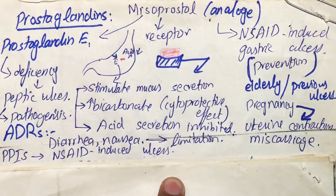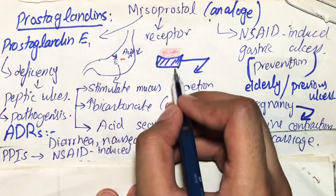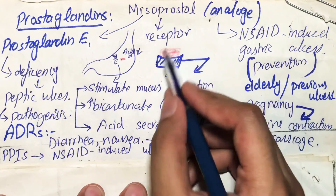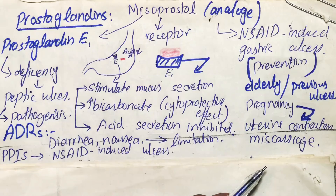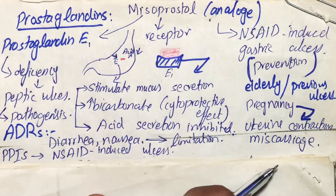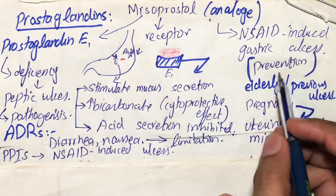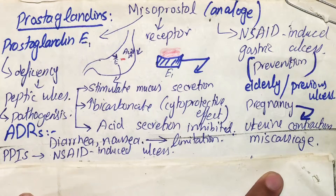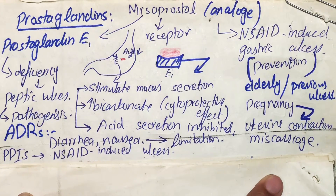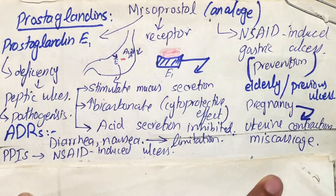To overcome prostaglandin deficiency, we discussed misoprostol, which is an analog of prostaglandin E1. It works by binding to the prostaglandin E1 receptor and causing activation of three things: stimulation of mucus secretion, increase in bicarbonate production, and decrease or inhibition of acid secretion. It can be used for prevention of NSAID-induced gastric ulcer — not for treatment. It is used in elderly patients or patients with a previous history of peptic ulcer who are also taking NSAIDs as therapy, making them prone to NSAID-induced gastric ulcer.